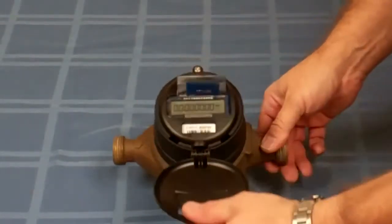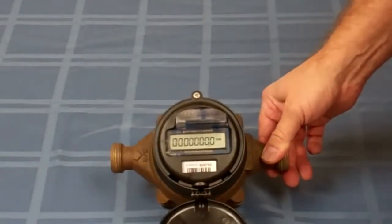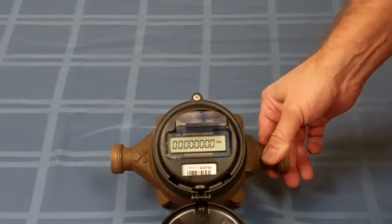You'll notice there's a little bit of play there to orient the register the way you like. And there you go, you've now turned an old Badger meter into a smart meter.